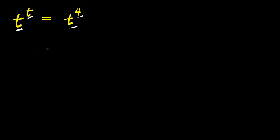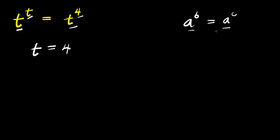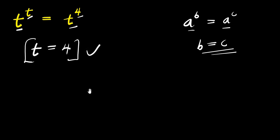If you consider this equation, you can see that one of the solutions is t equals 4. This is because of the identity: if a to the power of p equals a to the power of c, since the bases are the same, you compare the exponents, so p equals c. Because of that, t equals 4 is one of the valid solutions.